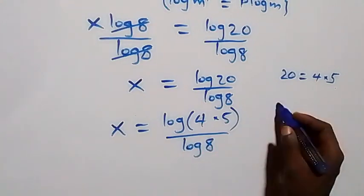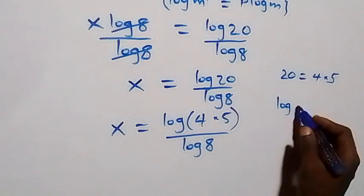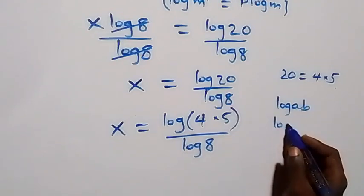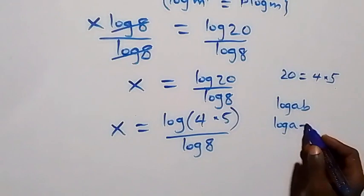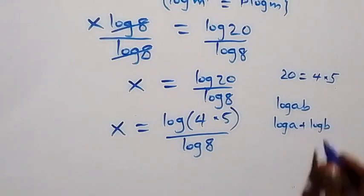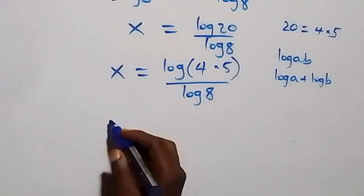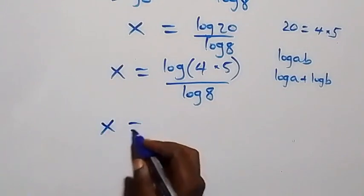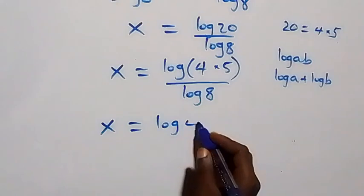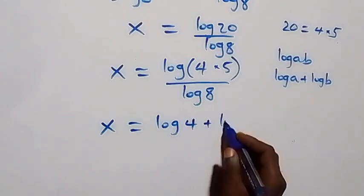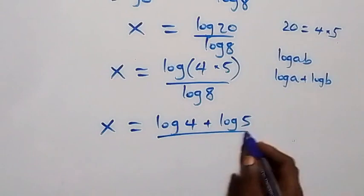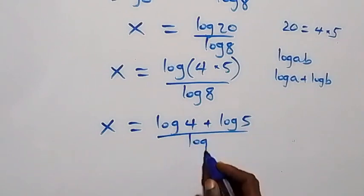From the product law of logarithm, log of a times b is the same as log a plus log b. So this gives us x equals to log 4 plus log 5, all over log 8.